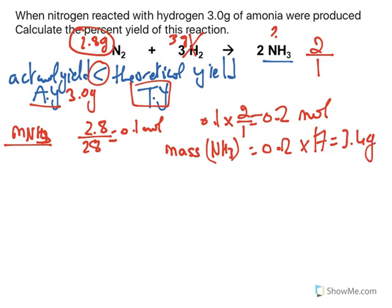So this is what we call the theoretical yield. This is the amount of ammonia that we can obtain if this reaction was 100% successful, but of course there is no reaction in the world that can be 100% successful.